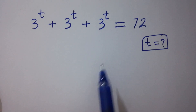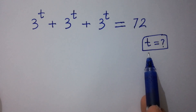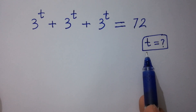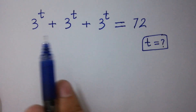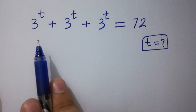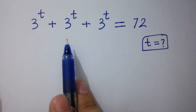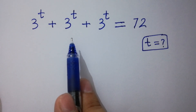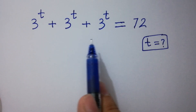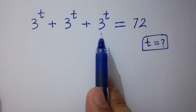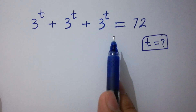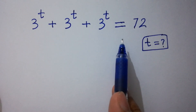Hello friends. Find the value of t if 3 to the power t plus 3 to the power t plus 3 to the power t equals 72.